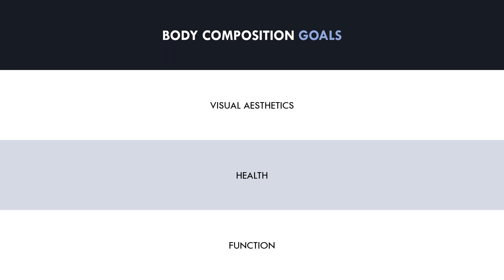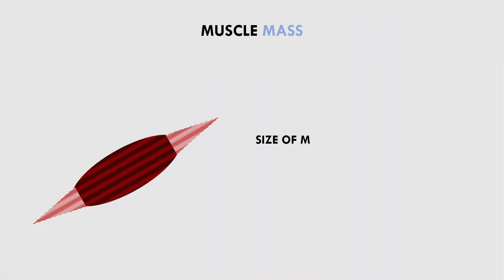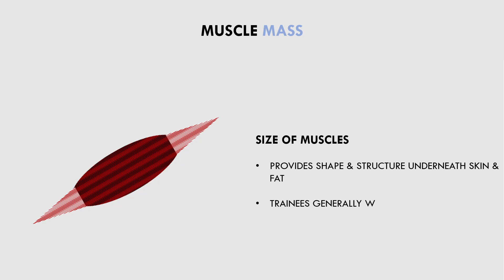Let's now cover what tissues contribute to the body composition goals for most trainees. First is muscle mass — this is how much muscle tissue we have and what muscles we want to develop. Muscle mass is an important component of body composition as it provides the shape and structure of the body underneath the skin and fat. Generally, trainees want to increase muscle size, as this will have the visual appearance of muscles pushing against the skin, making the trainee look bigger and more defined.